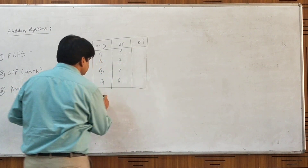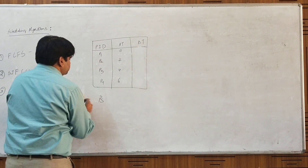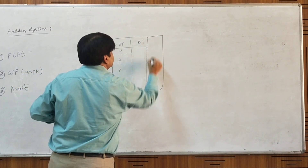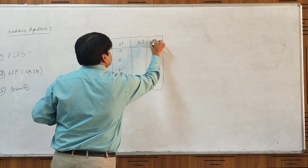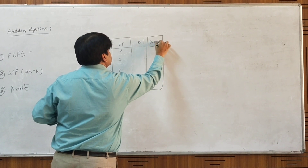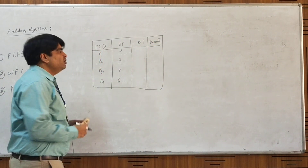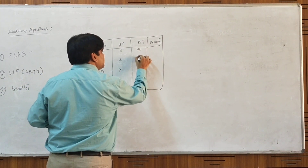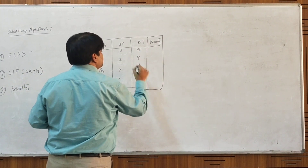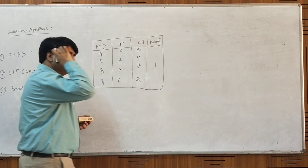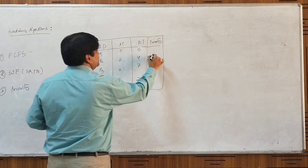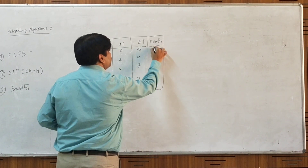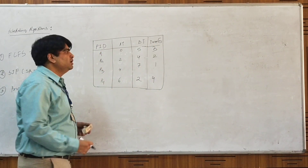Taking another example. One more column is added to the table which shows the priority of each particular process. Let's say the burst times are as given. The priority of P1 is 1 (highest), P2 has priority 2, P3 has priority 4, and P4 has priority 3. Let's consider arrival time to be 0 for all processes.